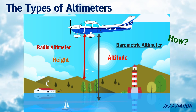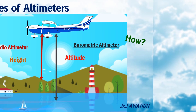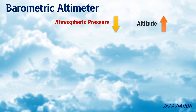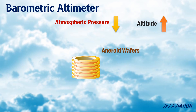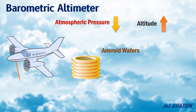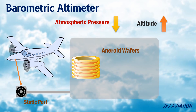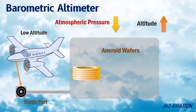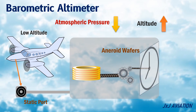Let's look at how a barometric altimeter functions. The barometric altimeter works on the principle that atmospheric pressure decreases as the altitude increases. This altimeter consists of a stack of sealed aneroid wafers at a fixed pressure. These wafers can expand or contract depending on the pressure, which is taken from static ports located on the skin of the aircraft. When an aircraft is flying at high altitudes, the pressure is low, so the aneroid wafers will expand. When flying at lower altitudes, the pressure increases and the aneroid wafers will contract. The aneroid wafers are connected to the needles of the altimeter through mechanical links, so when the wafers expand or contract, the needles will move, indicating the altitude.